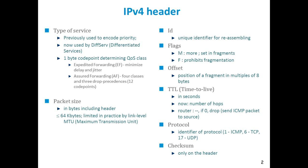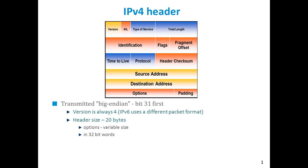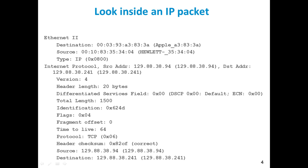The other fields include source address and destination address, which are IPv4 addresses. The options field holds extra bits added beyond the 20 bytes — for example, strict source routing, which requires all routers to be set; loose source routing, where only a few routers need to be configured; record route; timestamp; and router alert, used for IGMP or reservation protocols. The last field is padding, added to make the header a multiple of 32-bit words.